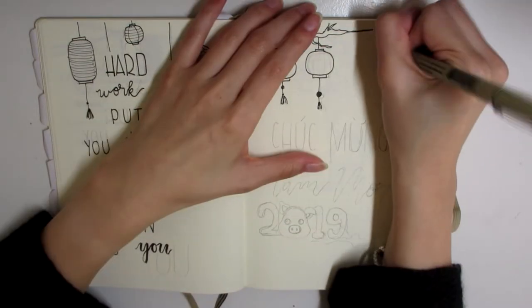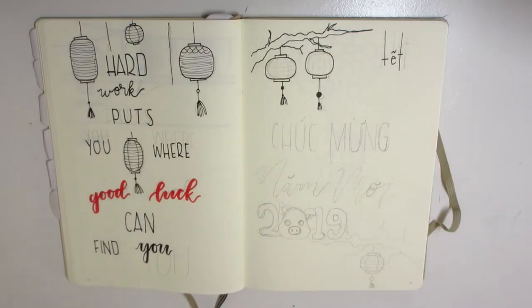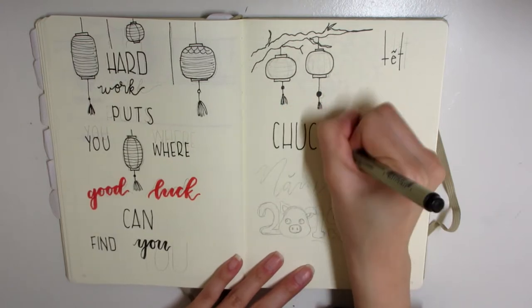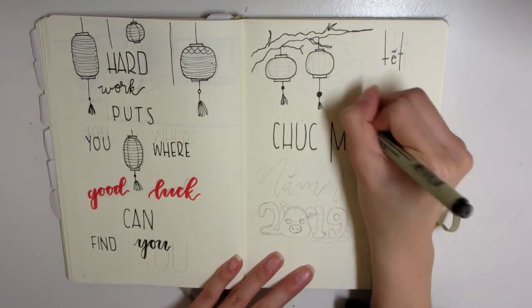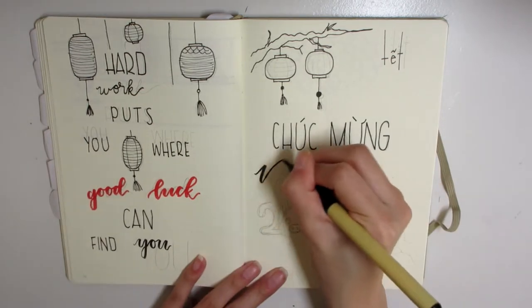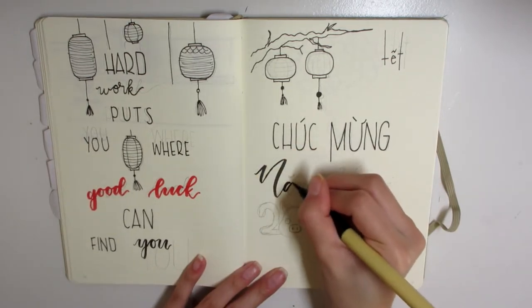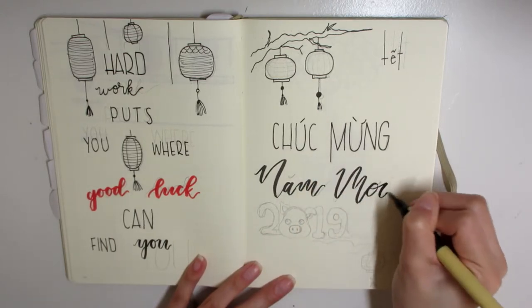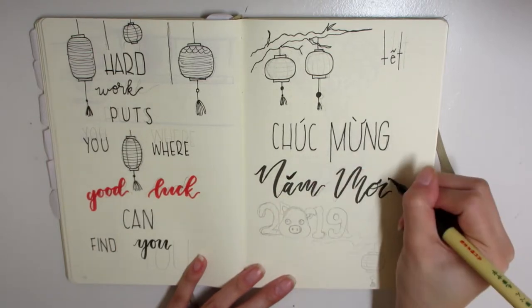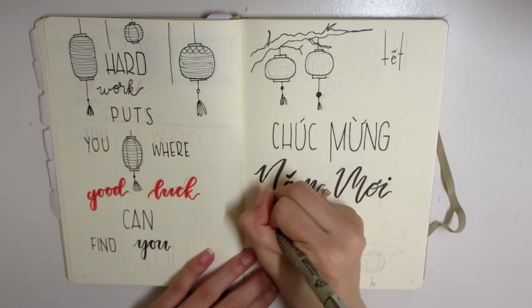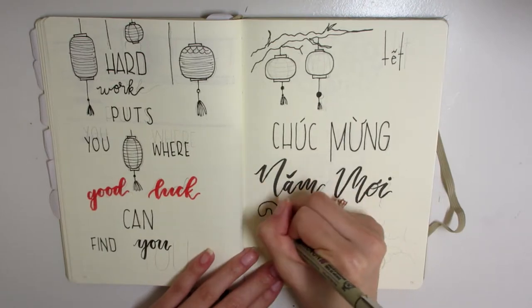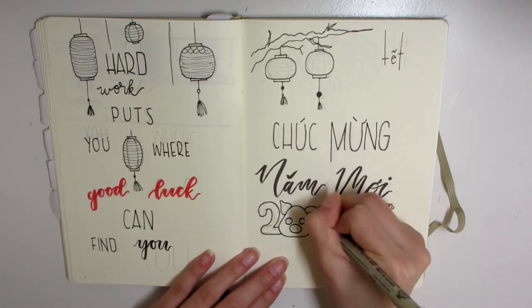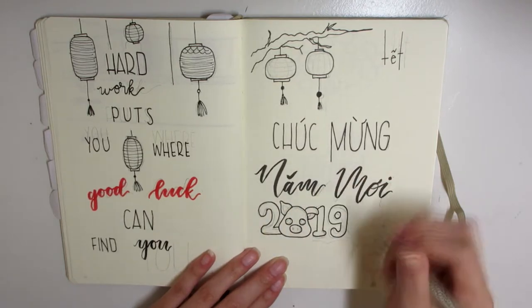Here I'm drawing more lanterns and having it hang on branches and writing that, which is basically Vietnamese for happy new year. This year is the year of the pig, so that's why you guys see the sketch of the pig right there at the bottom where it says 2019.